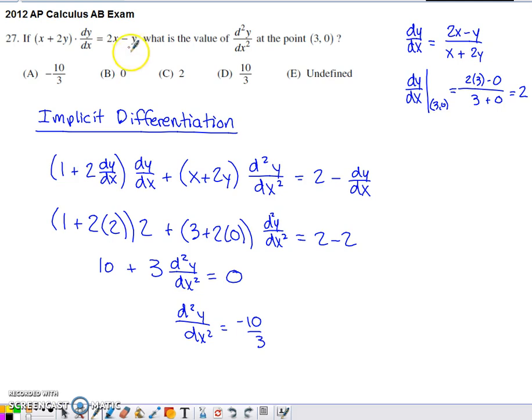If I solve this equation for dy dx, I'm going to have the right-hand side divided by that set of parentheses, this x plus 2y quantity. If I evaluate the first derivative at this same ordered pair, so 3 in place of these x's and 0 in place of these y's, what I end up with is a first derivative value of 2.